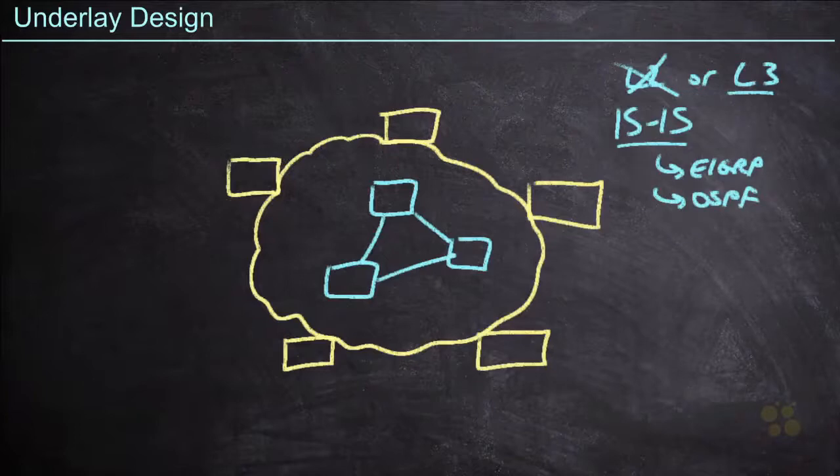Now as part of this routing protocol we need to make sure that we're advertising the loopback interfaces of the edge devices into the underlay. In other words, when we make our underlay connections, we're going to have layer three interfaces on these edge devices that connect to layer three interfaces on the underlay devices.